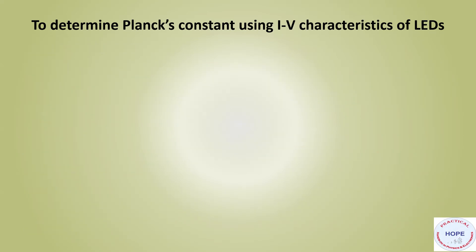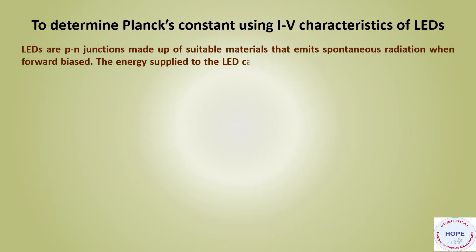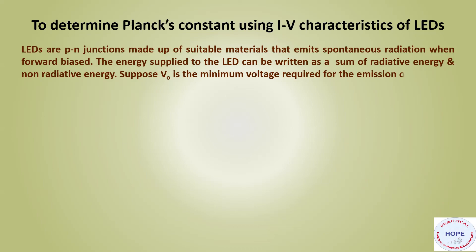Now we have to evaluate its value using IV characteristics of LEDs. LEDs are p-n junctions made up of suitable materials that emit spontaneous radiation when forward biased. The energy supplied to the LED can be written as a sum of radiative energy and non-radiative energy. Suppose V0 is the minimum voltage required for the emission of light, then we can write eV0 equals hC/lambda plus phi.